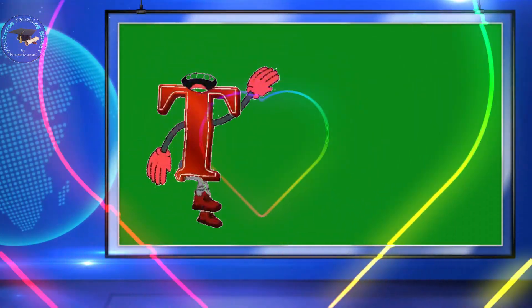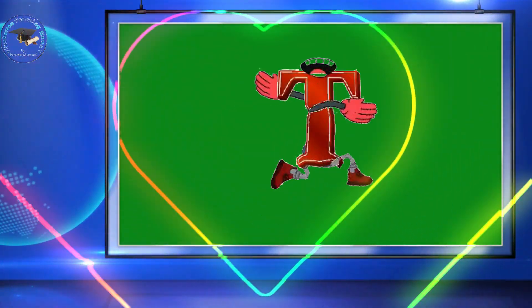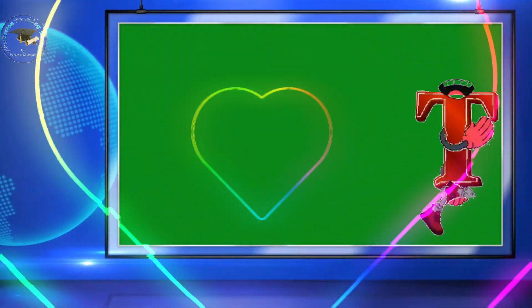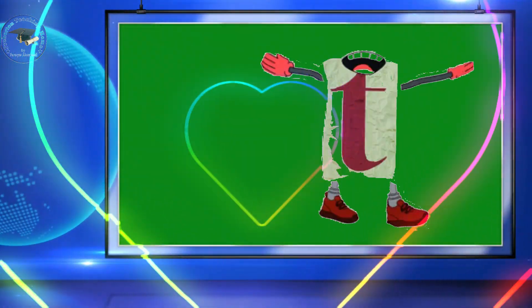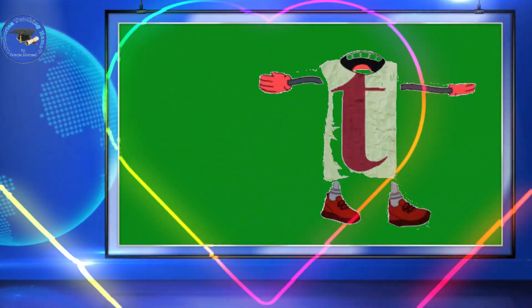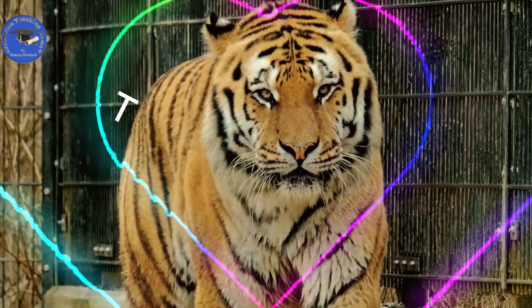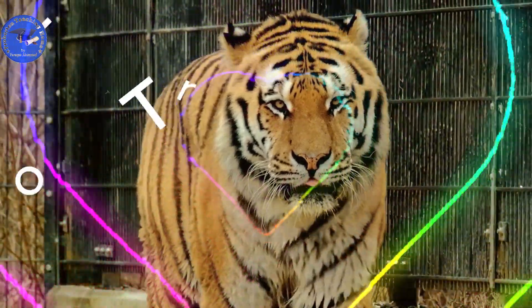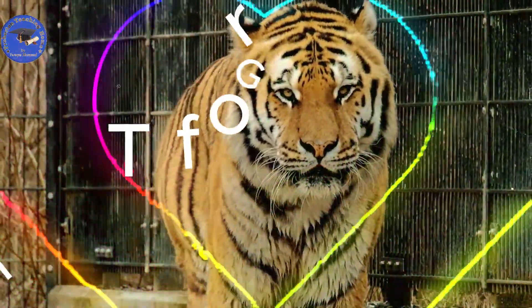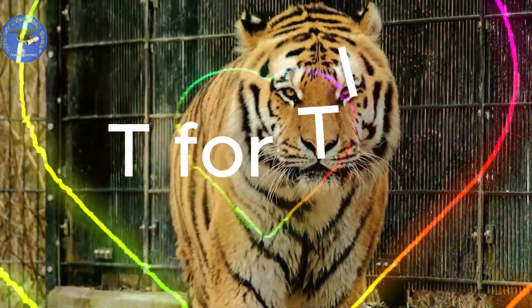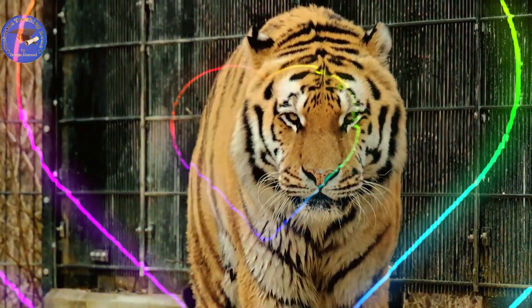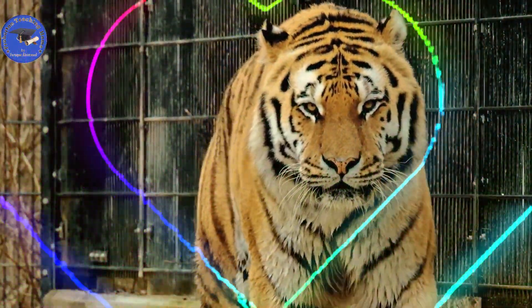Hello kids! I'm the letter T — capital T and small t. You spell my name T. T for tiger — T-I-G-E-R. Tiger.